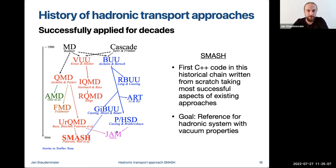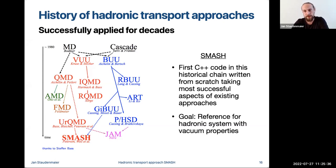Hadronic transport approaches have been successfully applied for decades. Looking at a historical graph, the earliest ancestors date from the 1980s, and a large number of codes have followed. SMASH fits into this chain as a newer C++ code written largely from scratch, taking the most successful aspects from existing approaches — particularly UrQMD and GiBUU — with the goal of providing a clean hadronic system with vacuum properties.